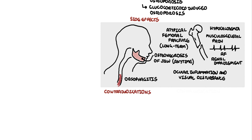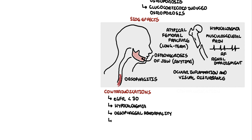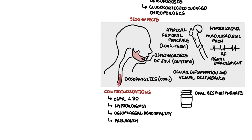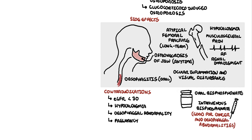Contraindications to bisphosphonates include poor renal function with an eGFR less than 30 to 35, hypocalcemia, and esophageal abnormalities such as a stricture. There is also some relative contraindication during pregnancy and lactation. Bisphosphonates come in two forms: oral bisphosphonates such as alendronate and risedronate, and IV bisphosphonates such as zoledronic acid. IV bisphosphonates are usually used for those with malignancy or esophageal abnormalities, and can cause flu-like symptoms within 24 to 72 hours after administration.